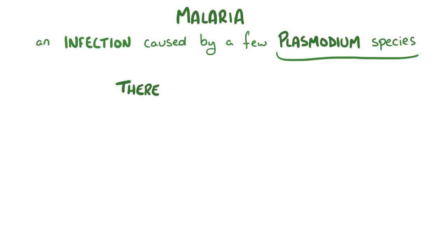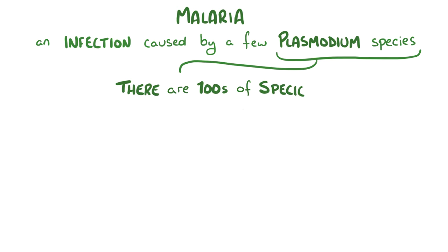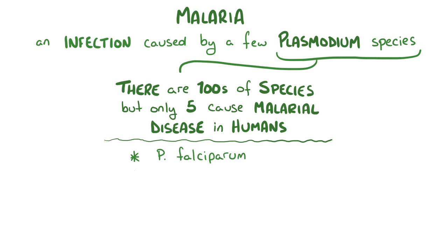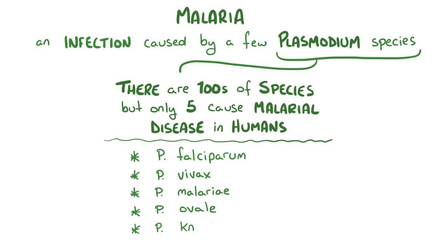There are hundreds of types of plasmodium species, but only 5 cause malarial disease in humans, and those are Plasmodium falciparum, Plasmodium vivax, Plasmodium malariae, Plasmodium ovale, and Plasmodium knowlesi.